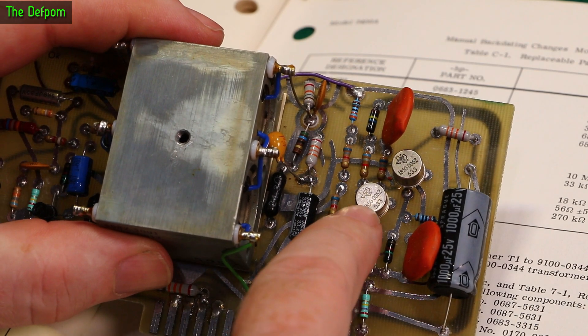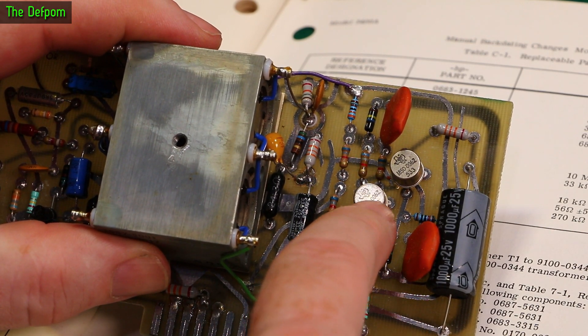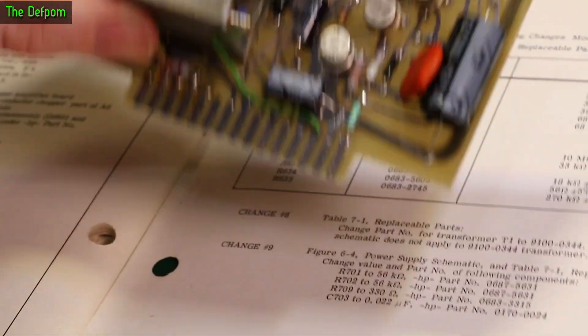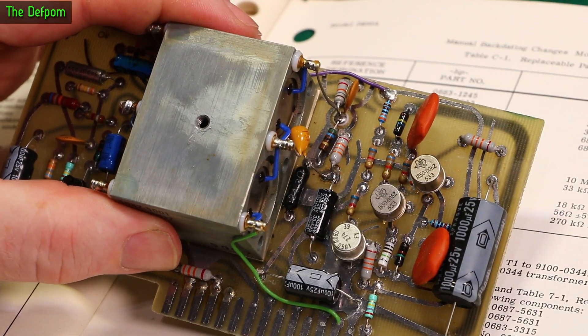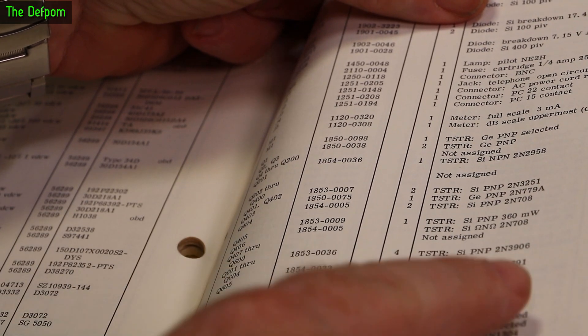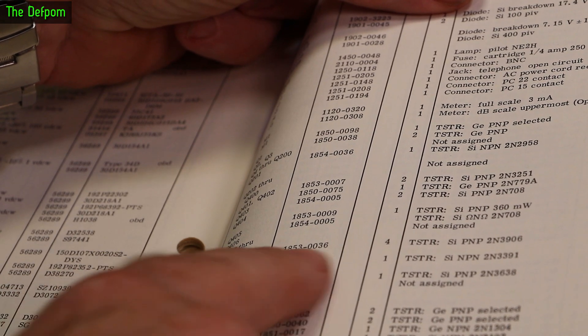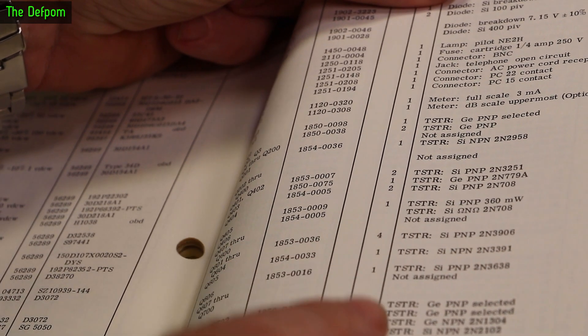So here you can see this is an 1850-0062, both of those parts. So it's not actually what is listed here in the parts list, which is interesting. So even the more modern parts list for the newer version of the board lists the same parts, 2N3906. So that's curious.